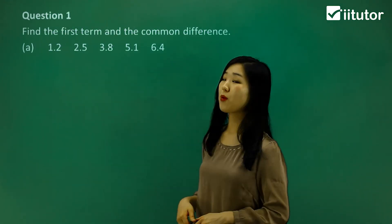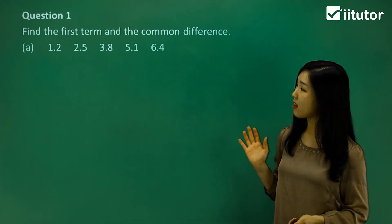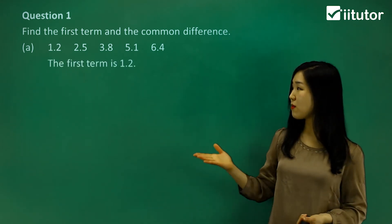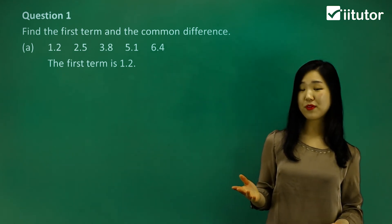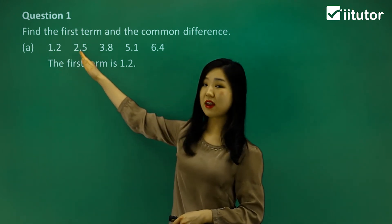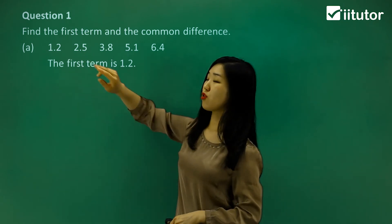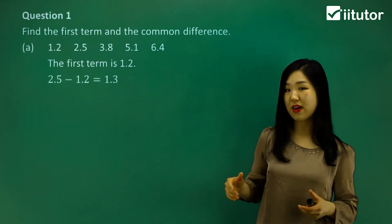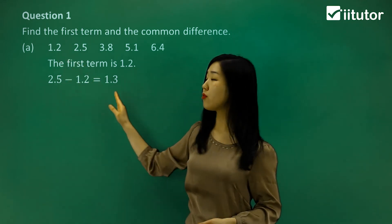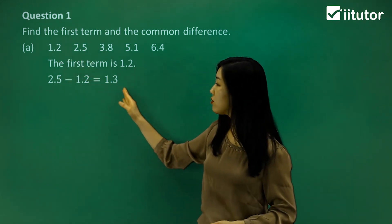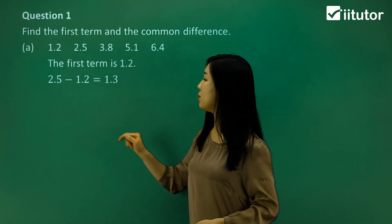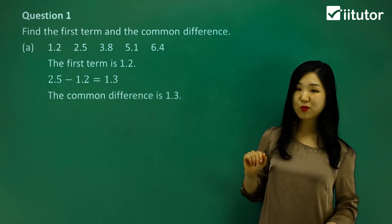Let's now go into some questions. It's asking us to find the first term and its common difference. The first term is quite easy to identify — you know that the first term is simply the first one in the sequence, which is 1.2. Now let's find the common difference. We need to know what we add to 1.2 to get every second number. The second number is 2.5, the first number is 1.2, and 2.5 minus 1.2 gives us 1.3. You can verify: 3.8 minus 2.5 is also 1.3. It should be the same because it's an arithmetic sequence. So the common difference is 1.3. As simple as that.